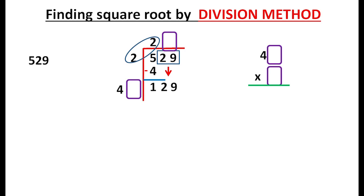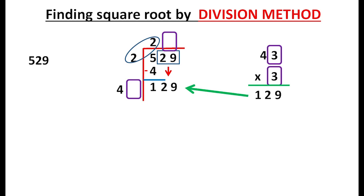Here we get 1 and 2. We try 42 × 2 = 84 — that is not 129. We try 43 × 3 = 129. So filling in the box: 43 × 3 = 129. Subtracting, the remainder is 0.